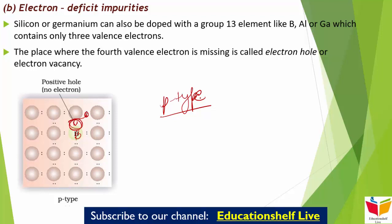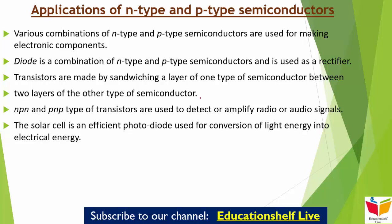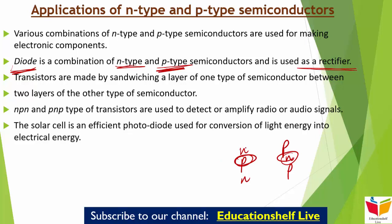अब N-type और P-type semiconductors के applications पढ़ते हैं। इनके various combinations से अलग-अलग electronic components बना सकते हैं। पहला component है diode — it is a combination of N-type and P-type semiconductors and is used as a rectifier। Transistors को बनाने के लिए sandwiching a layer of one type of semiconductor between two layers of the other type — जैसे N-P-N या P-N-P। NPN and PNP type of transistors are used to detect or amplify radio or audio signals।